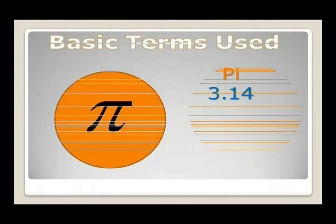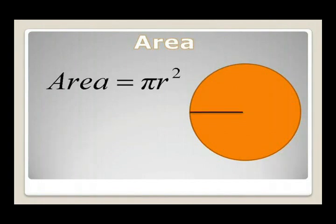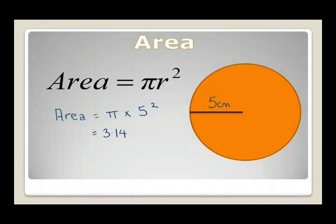First we will look at the area. The area of a circle is πr², which means pi times r times r. We will consider a radius of 5 cm. Substituting the value: area = π × 5² = 3.14 × 5 × 5, which gives us an answer of roughly 78 cm².